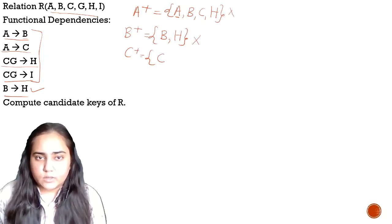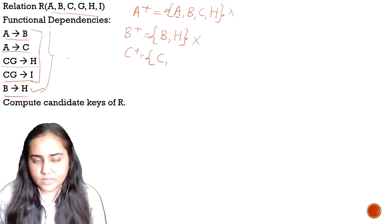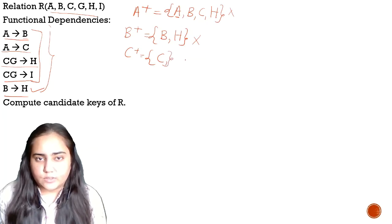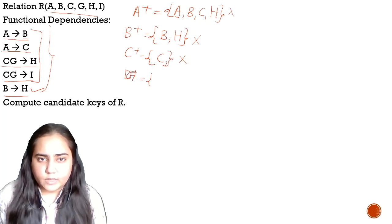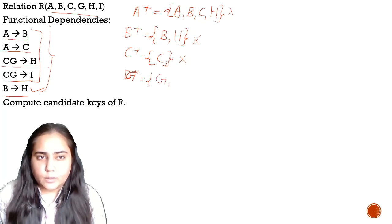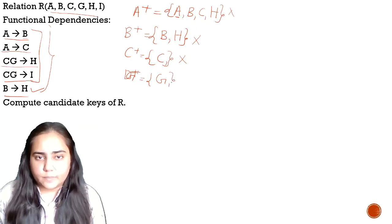Now let's try C. C itself will be in the set, but there is not a single dependency that contains only C on the left side, so I cannot add anything else. C is not a candidate key. Now let's calculate G-plus. I can add G itself, but there is no functional dependency that contains only G on the left side, so I cannot add anything else. G is not a candidate key either.